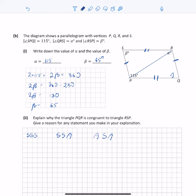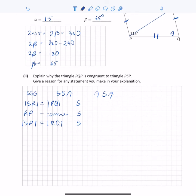RP is common to both triangles—that's the second side. And the length of SP equals the length of RQ—that's the third side. So by Side-Side-Side, I can prove that those two triangles are congruent.